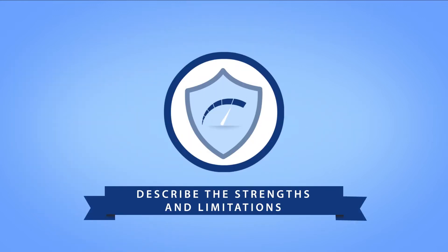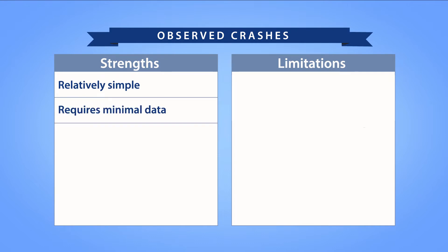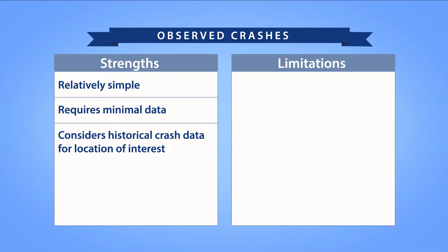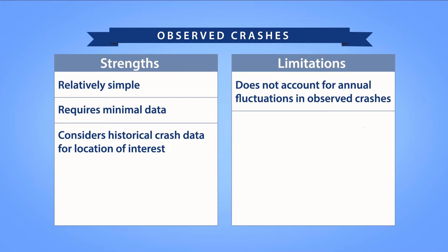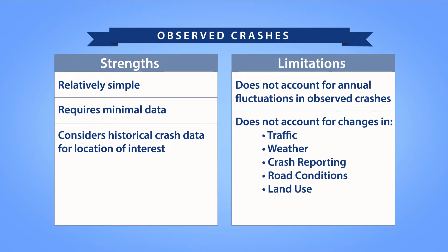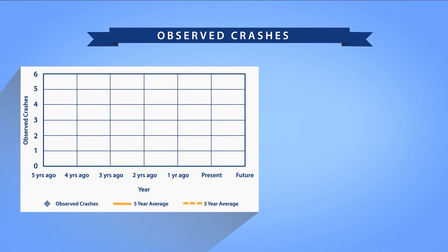Each approach has specific strengths and limitations, and these approaches differ in terms of reliability and data requirements. In some cases, data availability may limit the approach you choose. The observed crash frequency approach is relatively simple and requires minimal data. The reliability of this approach improves with a larger sample of observed crashes and smaller degree of fluctuation in annual observed crashes. The primary limitation is that it does not account for potential changes that affect safety performance at the location of interest from year to year — for example, changes in traffic, weather, crash reporting, road conditions, land use, vehicle fleet, or driver behavior, all of which could impact safety performance.